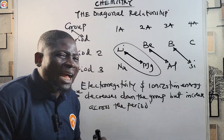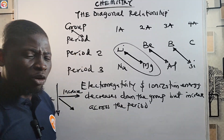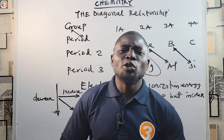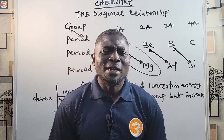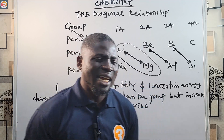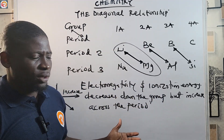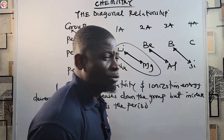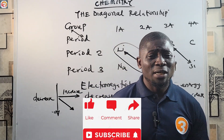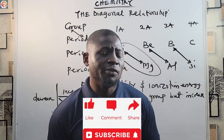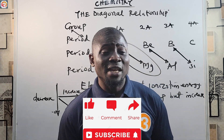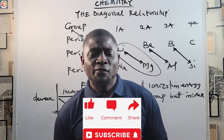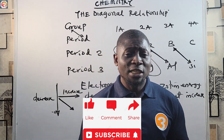So that is the concept of diagonal relationship — despite the fact that an element may not belong to a particular group, it will have similar properties to elements of another group due to its diagonal placement. Please take note of that. Make sure you like this video, subscribe to this channel for notifications whenever we publish a new video, share it with your friends and class groups preparing for various exams. See you in the next episode.